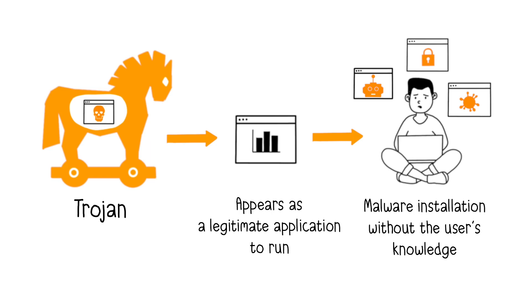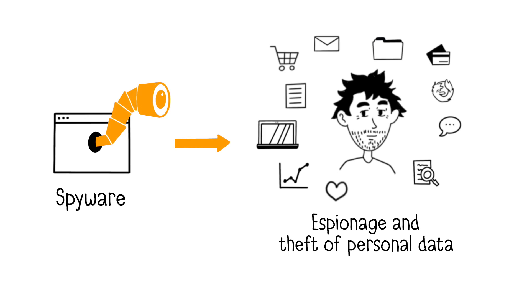Additionally, cybercriminals can take control of your device to carry out DDoS attacks or simply download other types of malware, such as viruses, ransomware, or spyware. Spyware collects information about you without your knowledge. This can include passwords, payment information, personal messages, documents, browsing habits, and information about your computer. One example is the keylogger, which records all keystrokes on your keyboard. All this stolen data is stored and then sent to the cybercriminal.